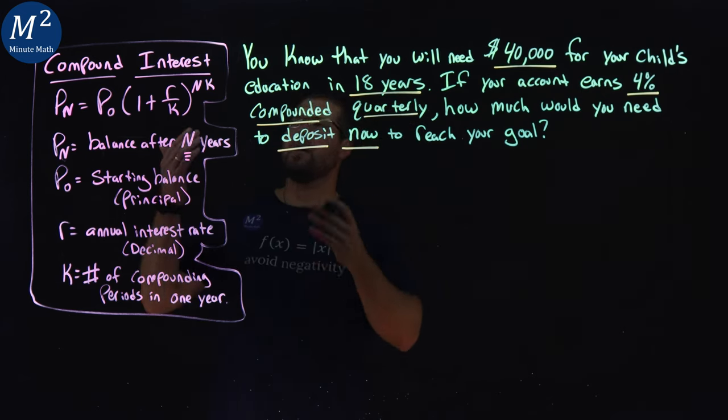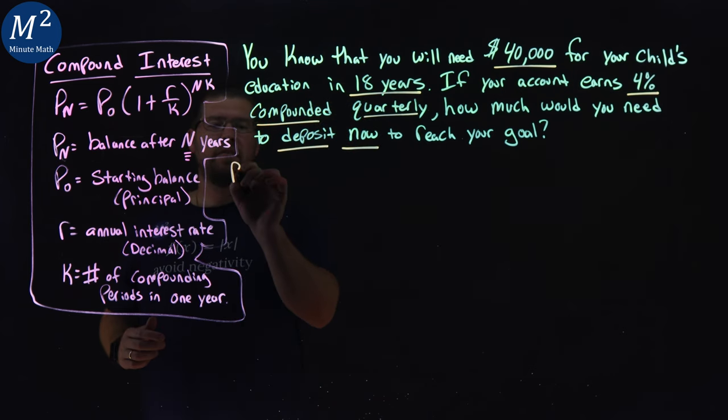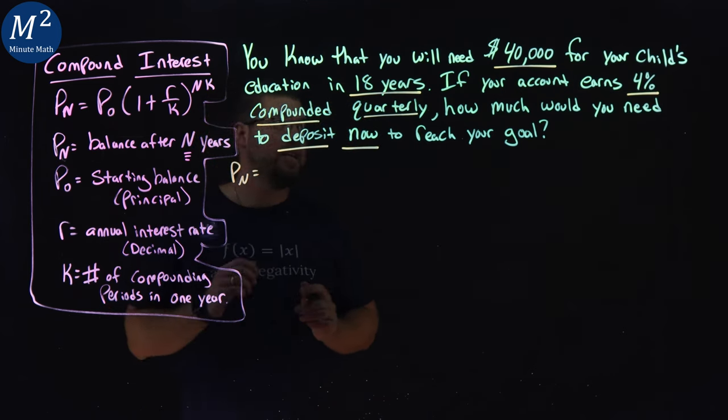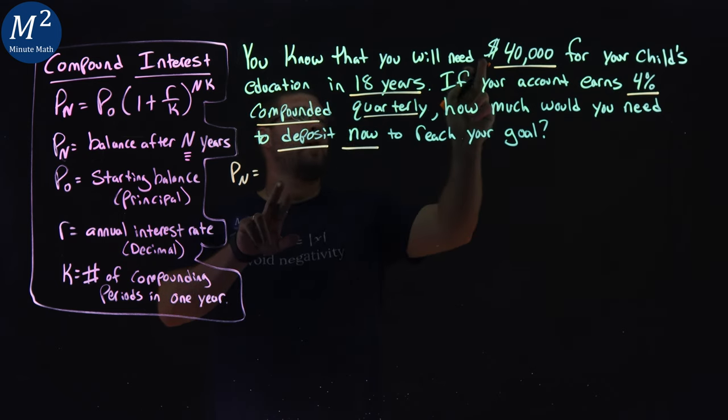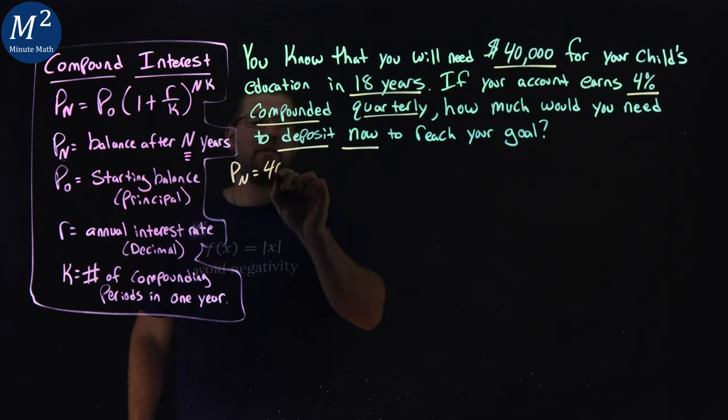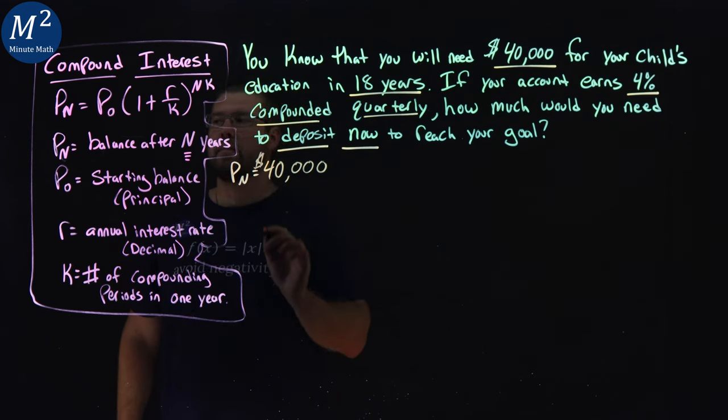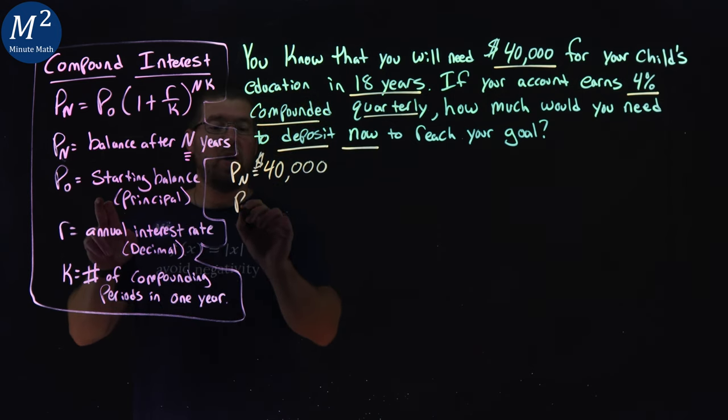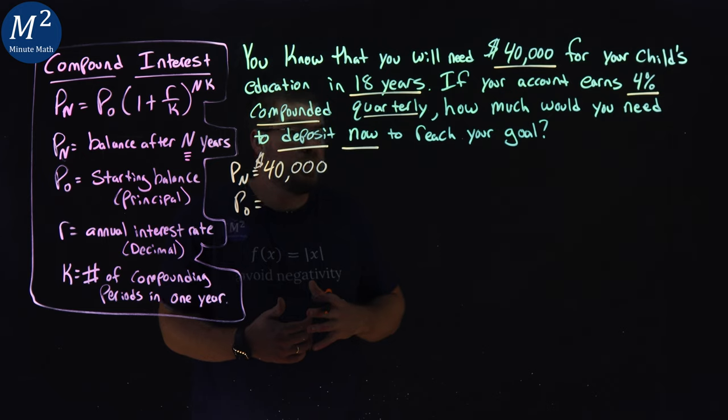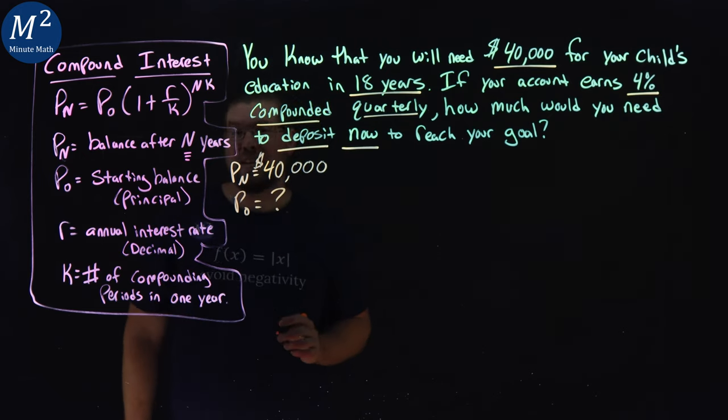So let's look for our compound interest formula and put in what we know. Our end balance after N years we're looking for is actually, this is a little different, where we know the amount we need is $40,000. We want to find the deposit amount. So that's our starting balance. We don't know how much we need to put into the account. That's our deposit. So that's what we're looking for.